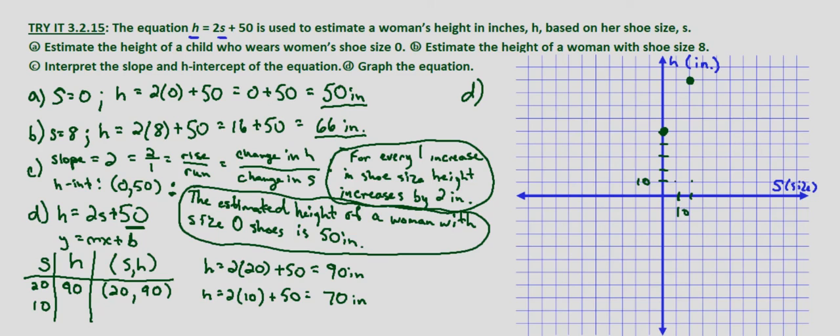So 10, 70 is our other point. So over to 10 and then 10, 20, 30, 40, 50, 60, 70, it does line up with our other points. And then graphing through those three points.